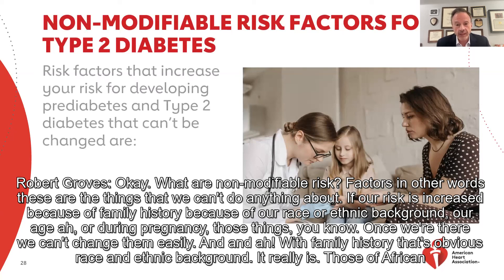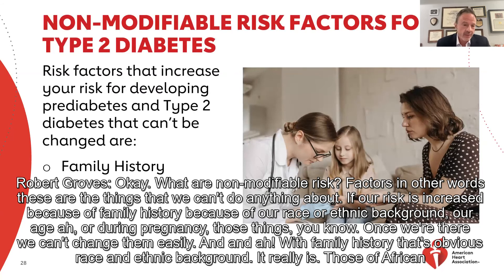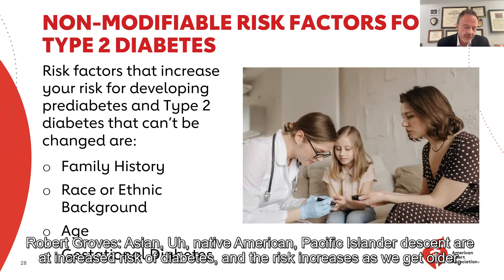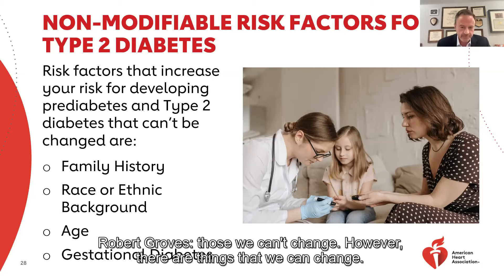What are non-modifiable risk factors? These are the things we can't do anything about. If our risk is increased because of family history, race or ethnic background, age, or during pregnancy — those things we can't change easily. With race and ethnic background, those of African, Asian, Native American, and Pacific Islander descent are at increased risk of diabetes. Age risk increases as we get older. And those we can't change.